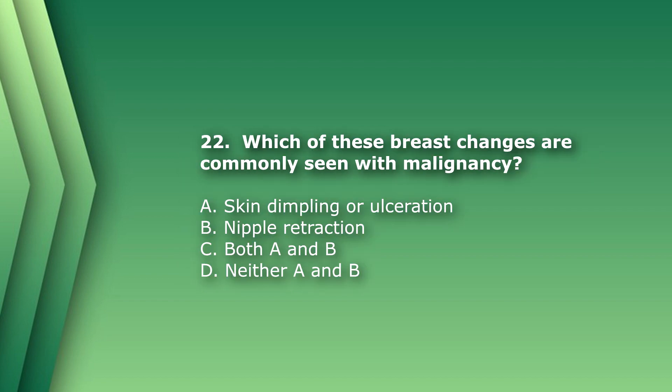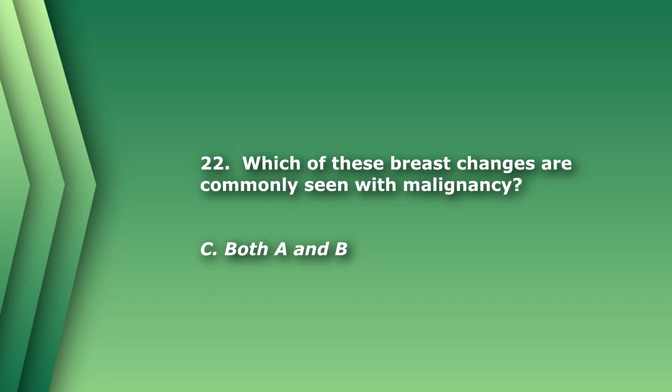Question 23: Which breast changes are commonly seen with malignancy? A) skin dimpling or ulceration, B) nipple retraction, C) both A and B, or D) neither A nor B. The answer is C) both A and B.